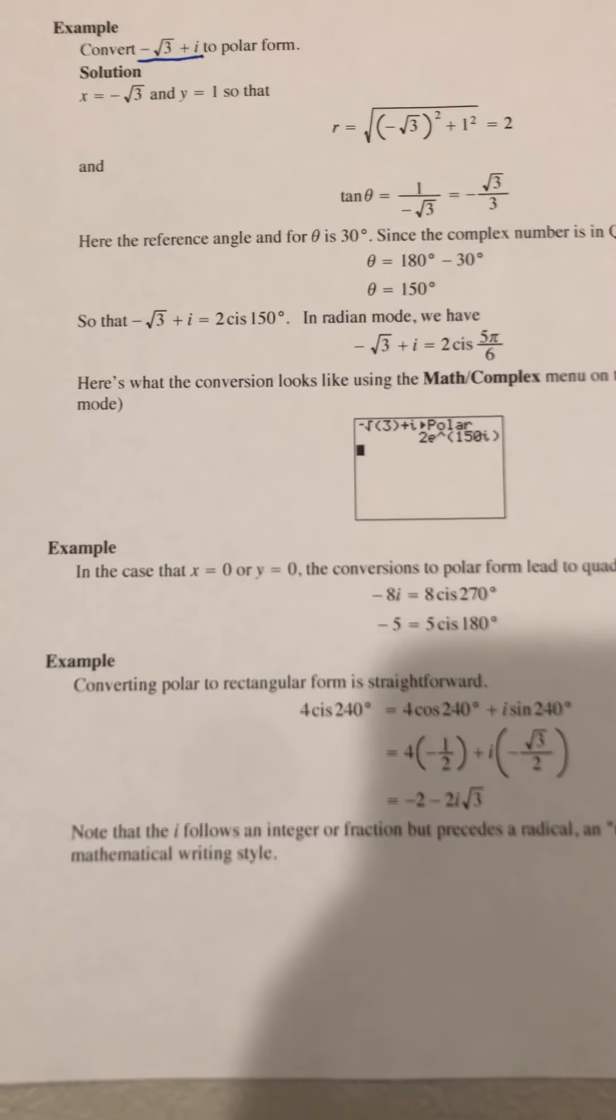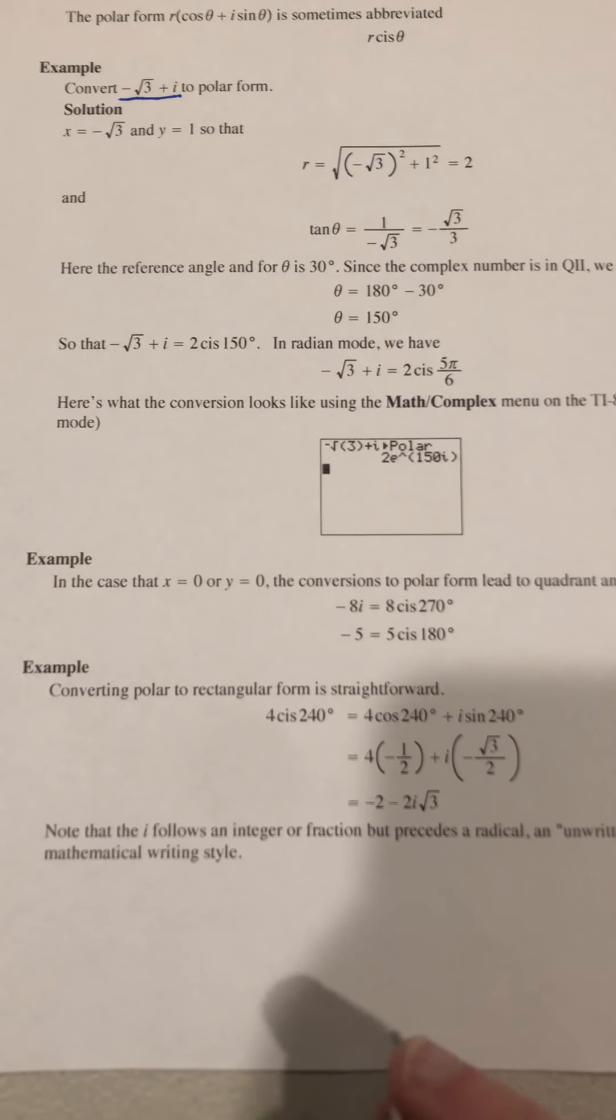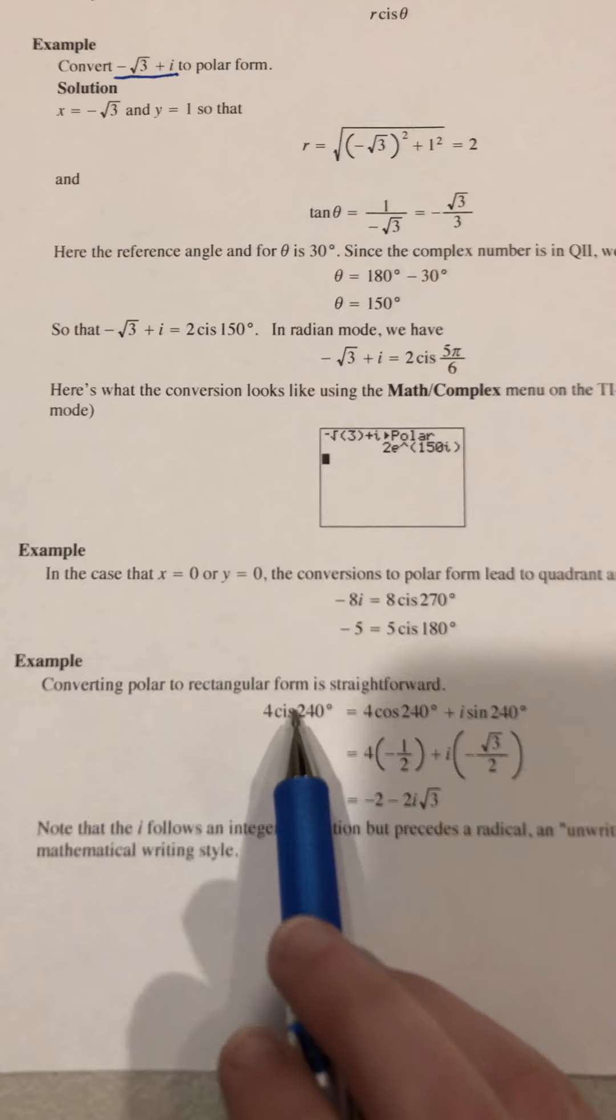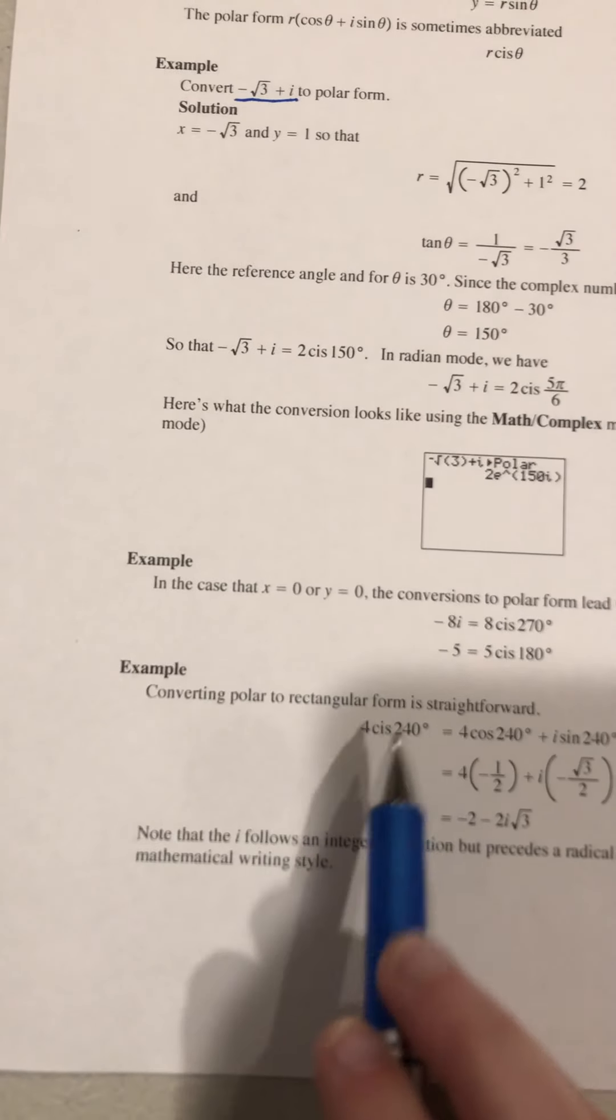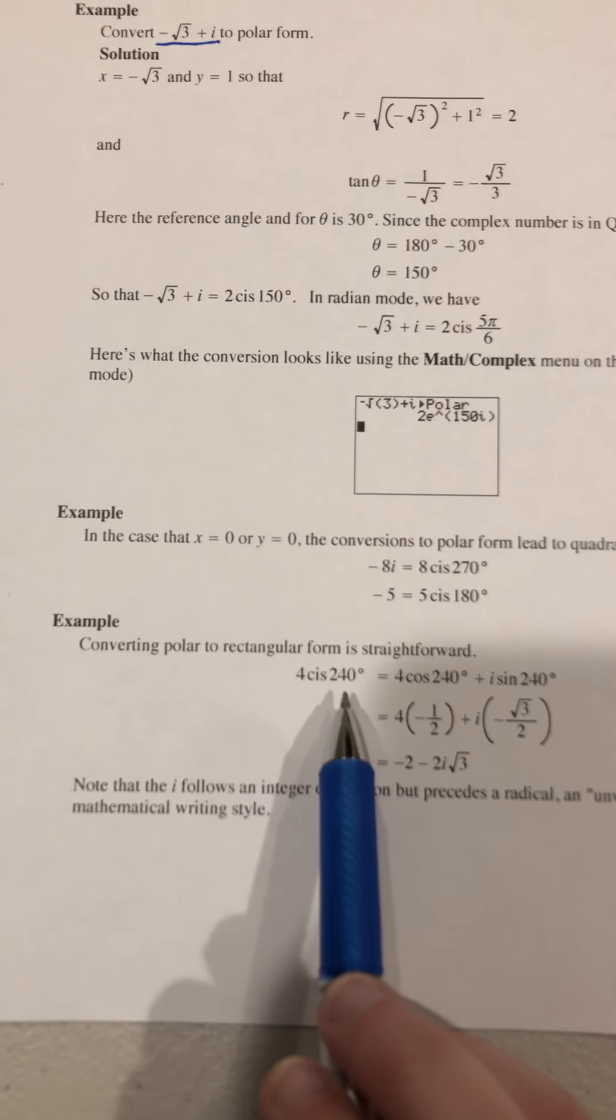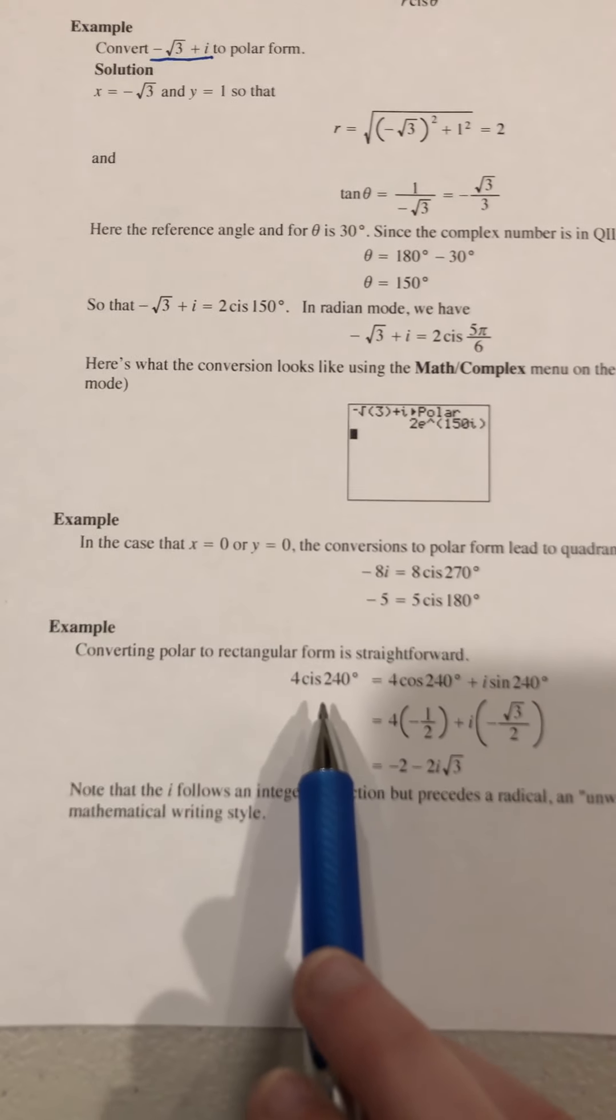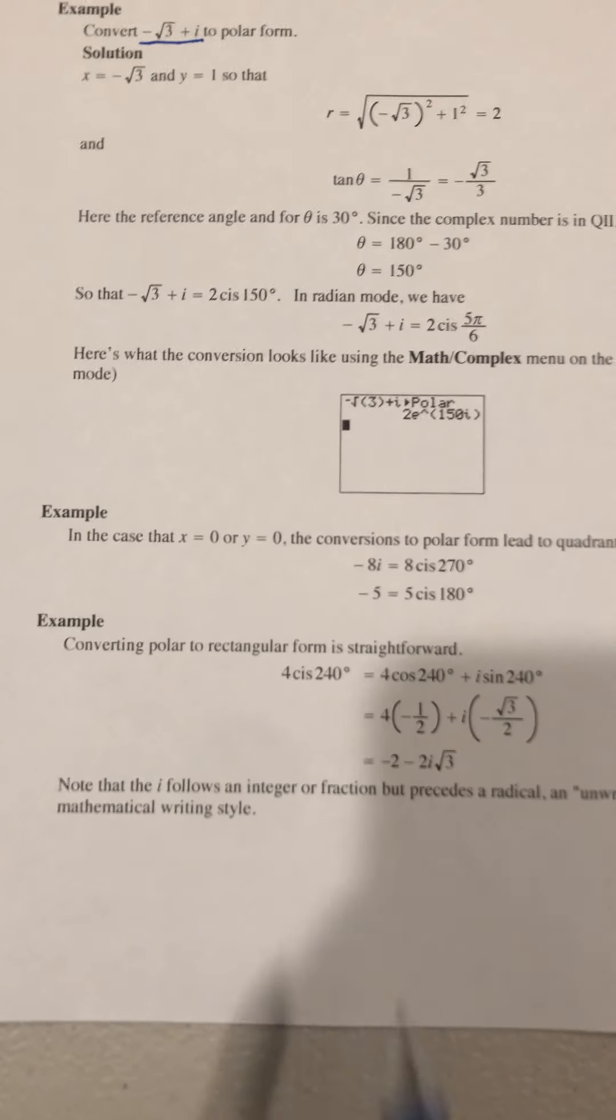And then down at the bottom here, we are going to take something from polar and change it to rectangular. So the example on your paper is 4 cis 240, and they separated it out, solved them individually, and put them back together.